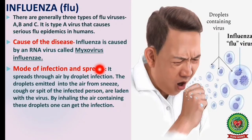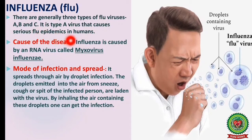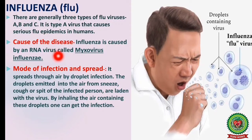First, talking about influenza: there are generally three types of flu viruses categorized as A, B, and C. It is the Type A virus that causes serious flu epidemics in humans. An epidemic is a disease which spreads at large scale. Influenza is caused by an RNA virus called Myxovirus influenzae.